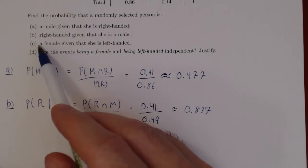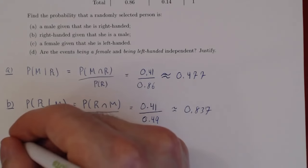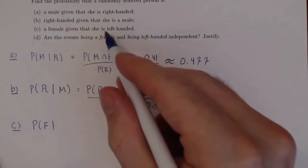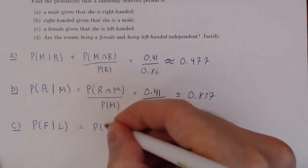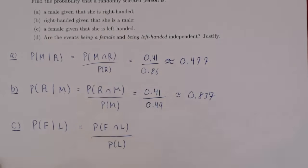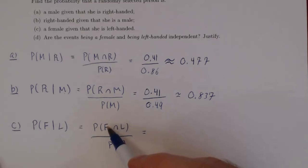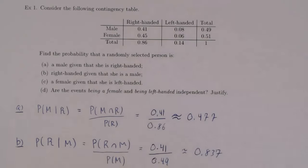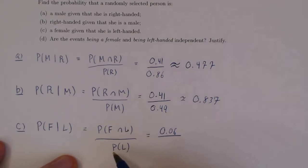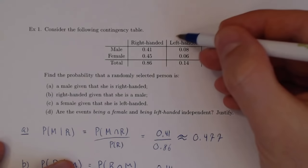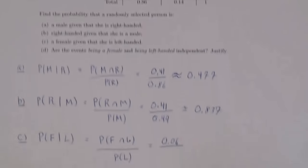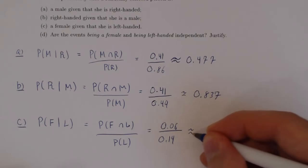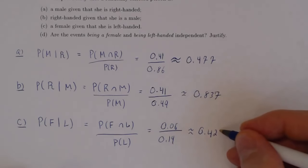Let's look at part C: the probability of someone being female given that she is left-handed. So the probability of someone being female given that we know the person selected is left-handed. As before, this is P of F intersected with L over P of L. We look for the proportion of people that are female and left-handed. The left-handed people are either male or female, and the total of left-handed people is 0.14. Computing this, you get approximately 0.4285, or about 0.429.